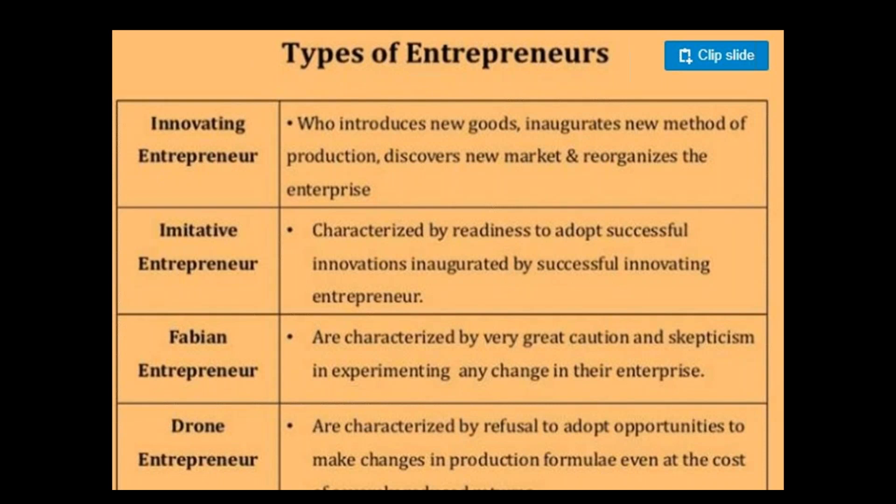Third are Fabian entrepreneurs, characterized by caution and skepticism. They are very skeptical about experimenting and do not like to change. Unless there is a high need for change — unless they see a situation where their organization might shut down — they will try to introduce change, and even then with much skepticism. Otherwise, they are comfortable with their current state.